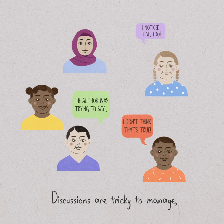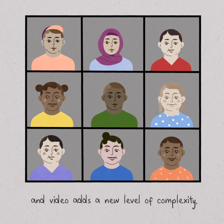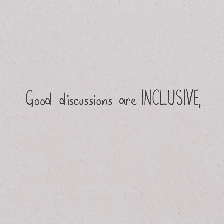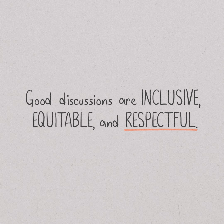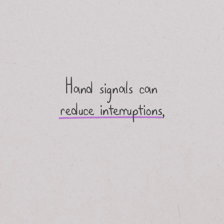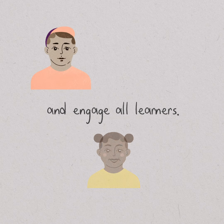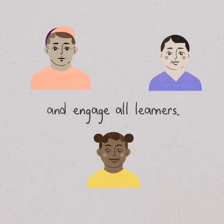Discussions in a physical classroom are tricky to manage, and conducting them by video adds a whole new level of complexity. Good discussions are inclusive, equitable, and respectful. An agreed-upon set of hand signals can reduce interruptions, allow more time to consider ideas, and provide a safe space that engages all learners.